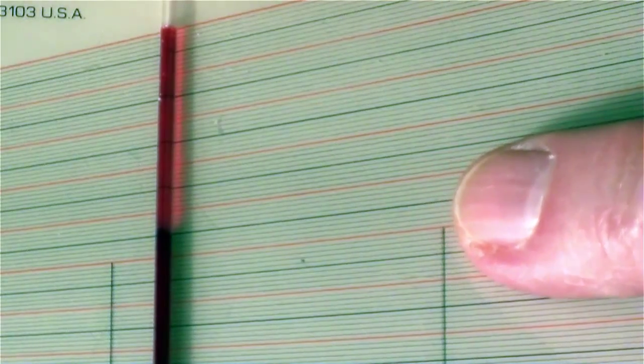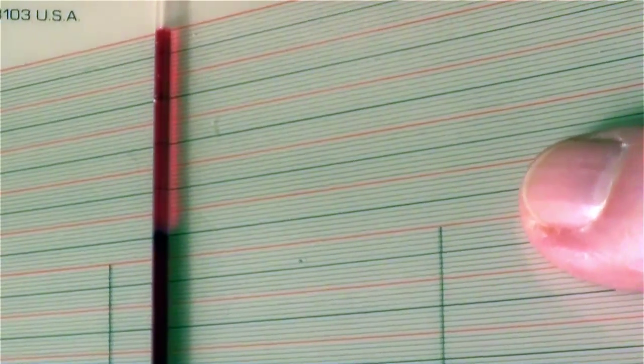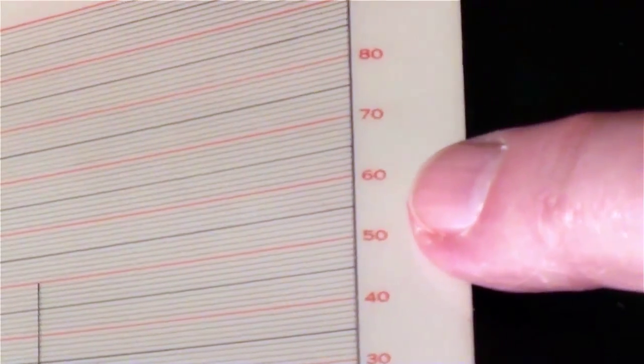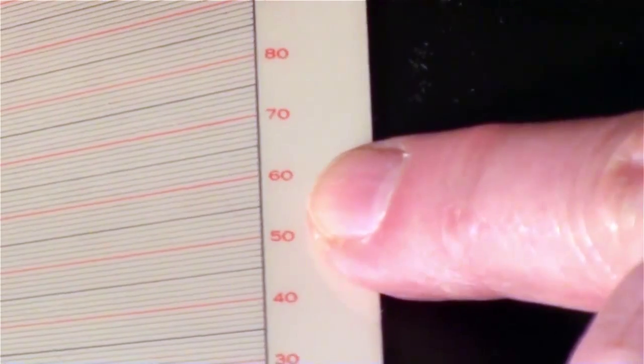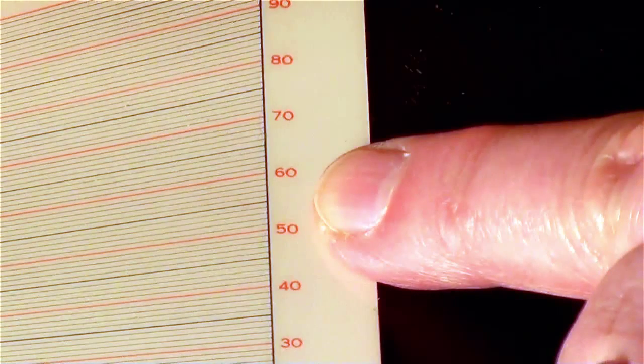If I follow it to the side, I'm going to find a number. In this case, it's 55. So that means this sample of cow blood was 55%. That's the hematocrit reading.